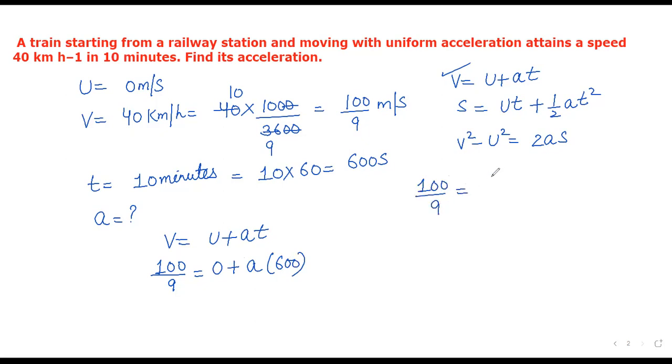So 600a = 100/9. Therefore a = 100/(9×600) = 1/54 m/s².